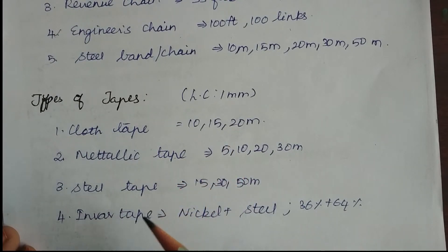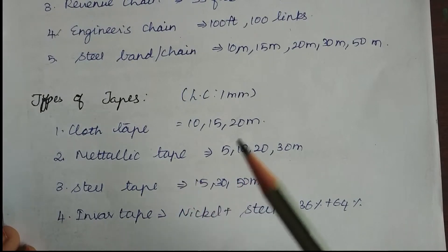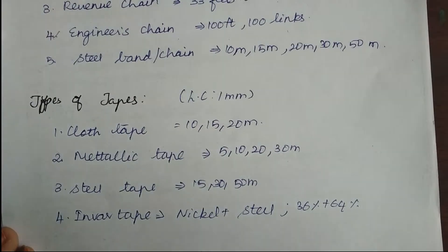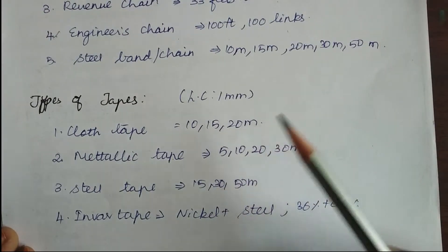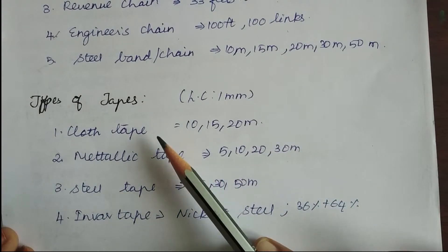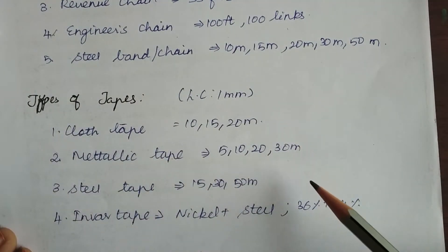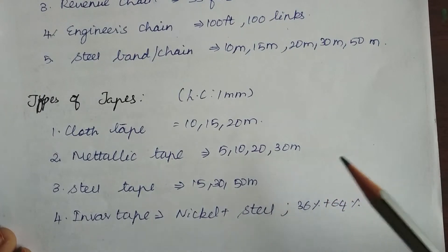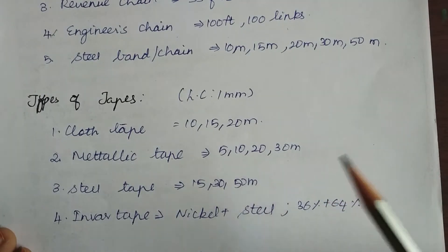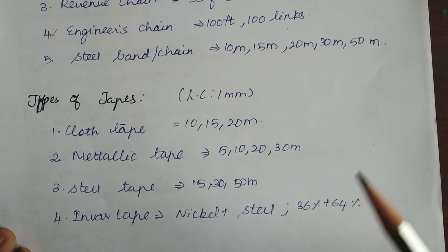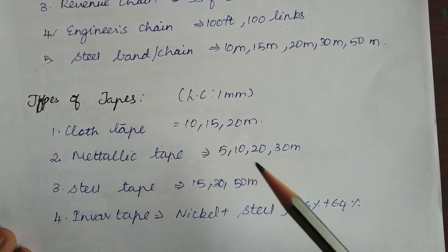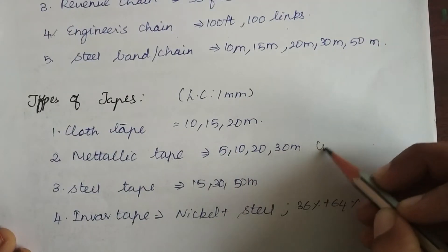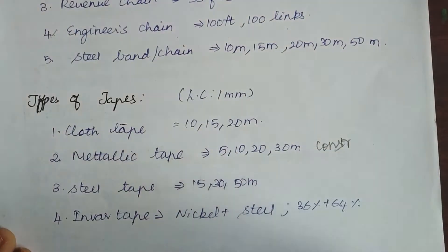The disadvantage of cloth tape is that due to moisture or dampness in the atmosphere the quality of the tape deteriorates. As a result it becomes difficult to measure distances and the tape gets twisted easily. The next type is metallic tapes — they are made of a varnished strip of waterproof linen interwoven with small brass, copper, or bronze wires. They are superior to cloth tapes and are mostly used on construction sites.